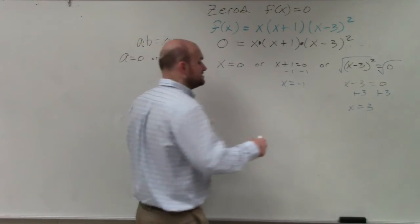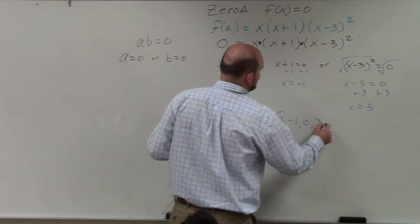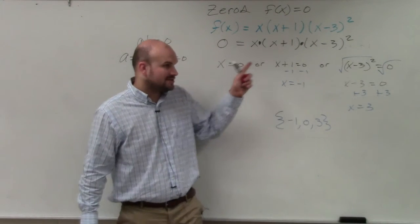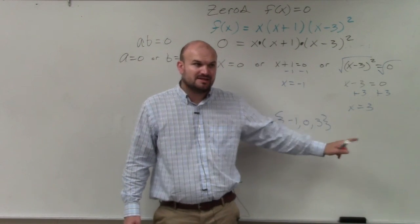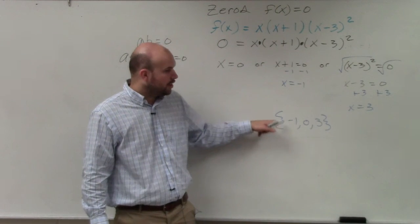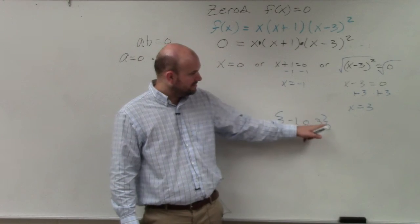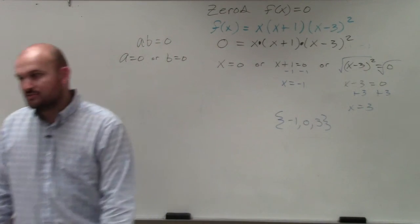We can also write this as a solution set, which I'd prefer you guys writing these as. Basically, a solution set is rather than writing each one as x equals 0, x equals negative 1, x equals 3, that's kind of redundant, isn't it? We could just say x equals all of these numbers would be our solution. So we write a set, which is like these brackets here. So you can just write them as a solution set.